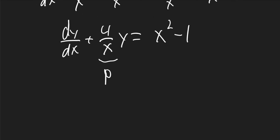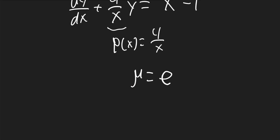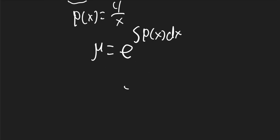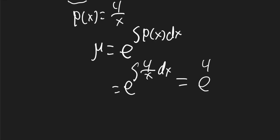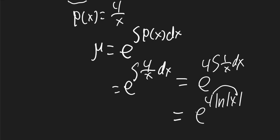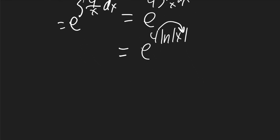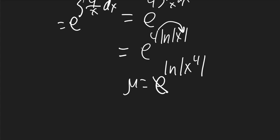My new p of x is 4 over x. We can now find mu. Mu is equal to e to the power of the integral of p of x dx. Since p of x is 4 over x, mu is e to the integral of 4 over x dx. Pulling the 4 out gives e to 4 times ln of x. The 4 becomes the exponent, giving e to ln of x to the 4th, and since e and ln cancel, mu equals x to the 4th.